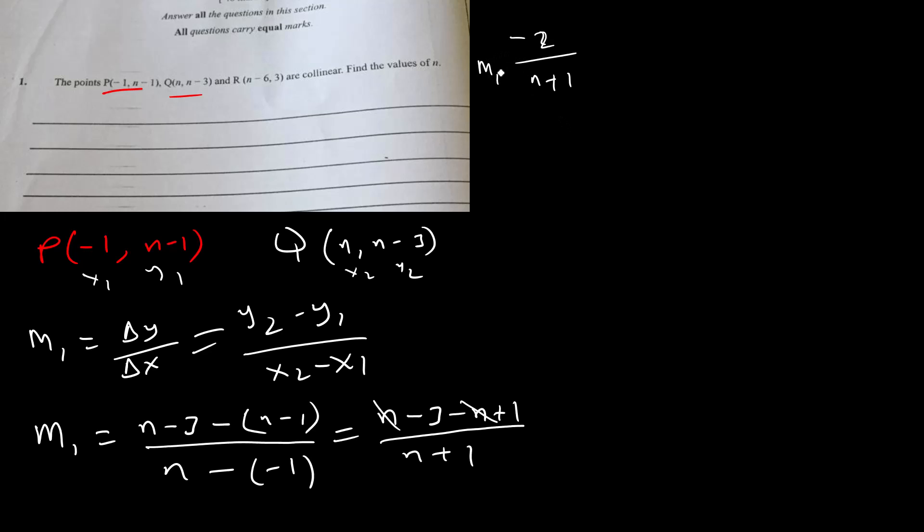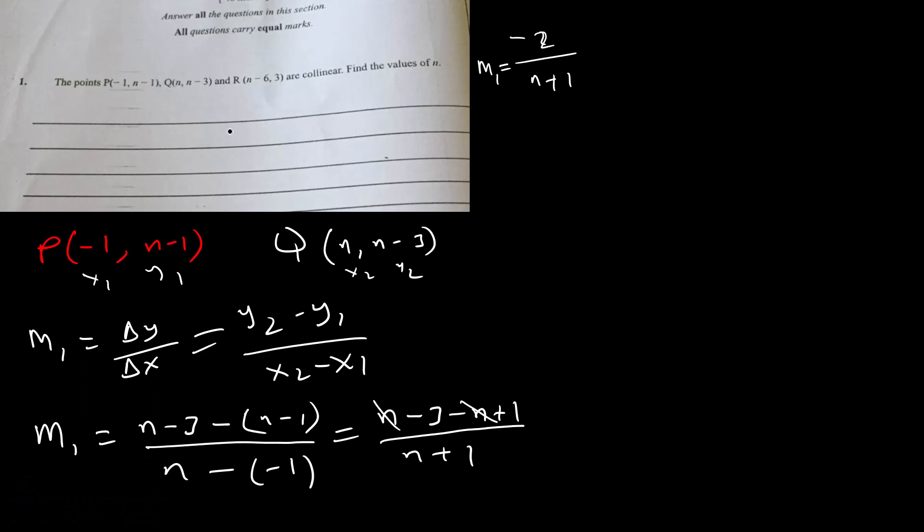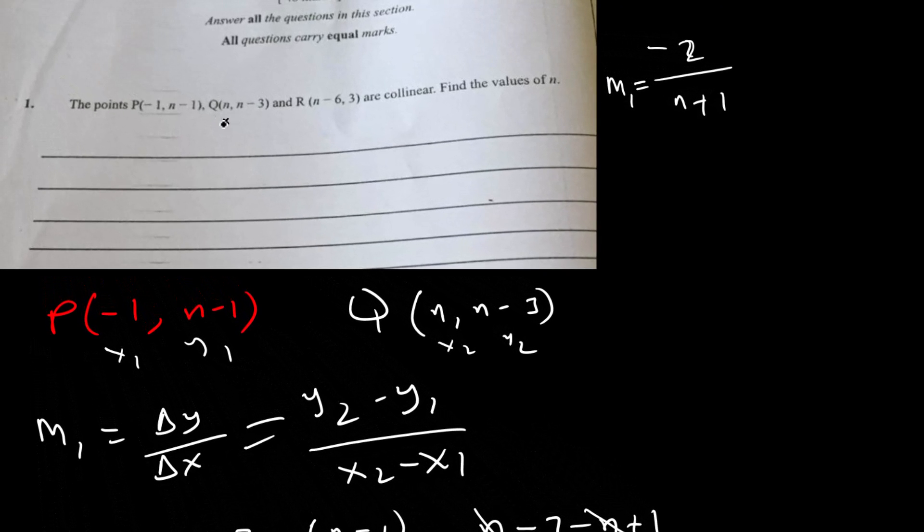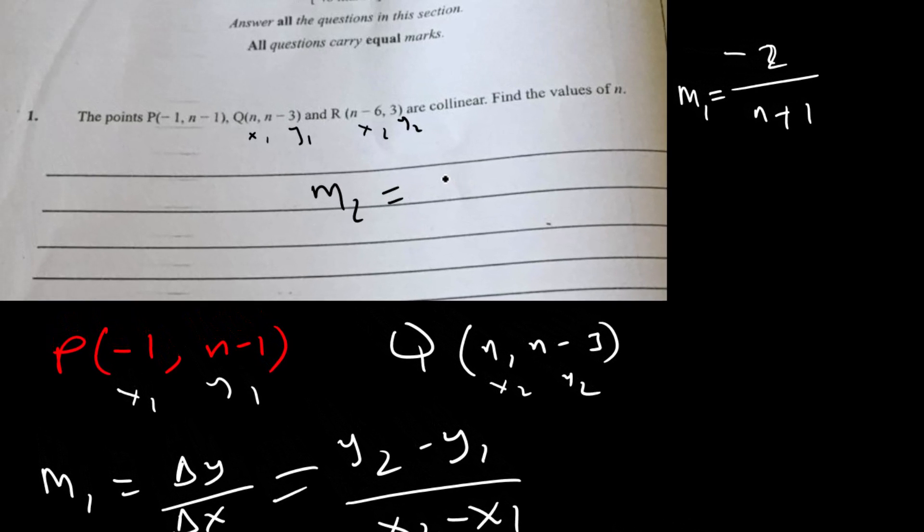Let's do the same for the other pair. This time I'll choose K and R. So K and R, let me call this one x1, y1 and x2, y2.